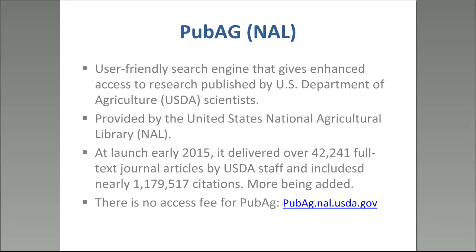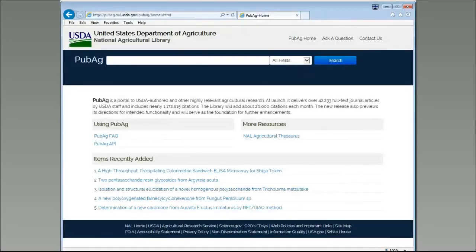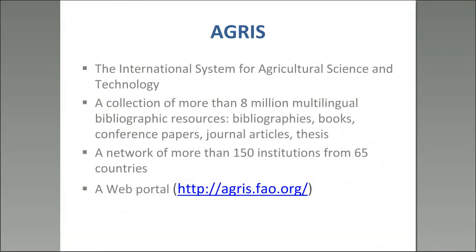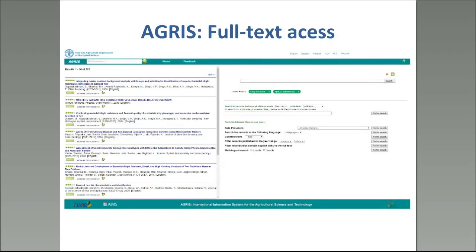A few other very useful resources for agricultural research: PubAg gives you access to research published by the U.S. Department of Agriculture. It's relatively new — only a couple of years old — but it's a free resource where you can search by keywords, find articles and resources, and it's very up to date with full text journal articles and a massive amount of citations. AGRIS is another extremely useful tool hosted by FAO, with a very large multilingual collection of bibliographic resources — bibliographies, books, papers, and journals — and it's also a network of institutions.